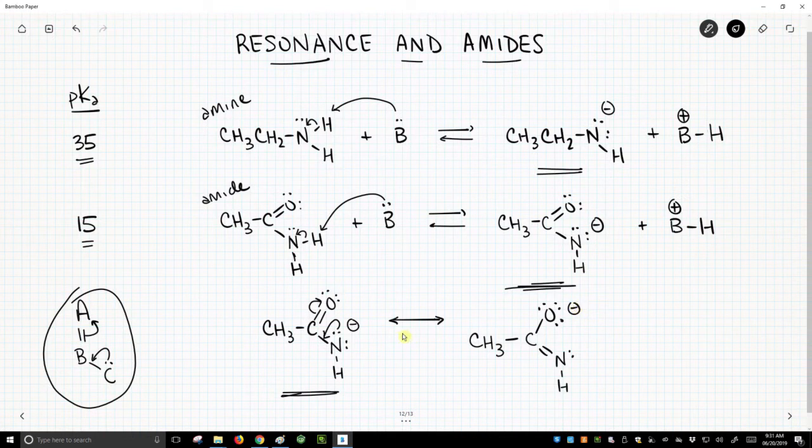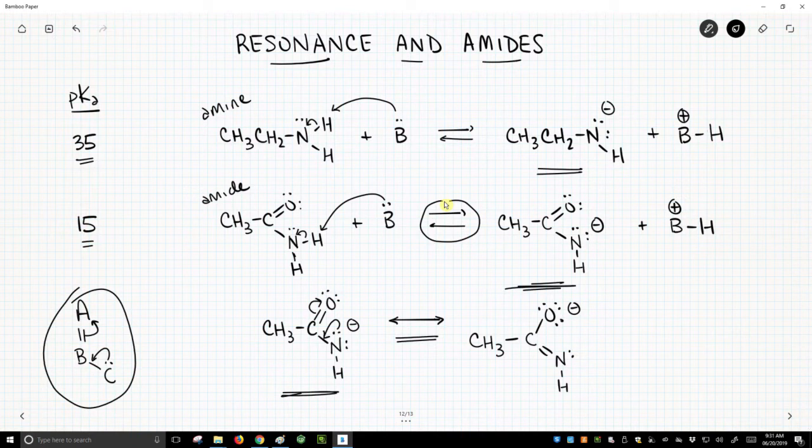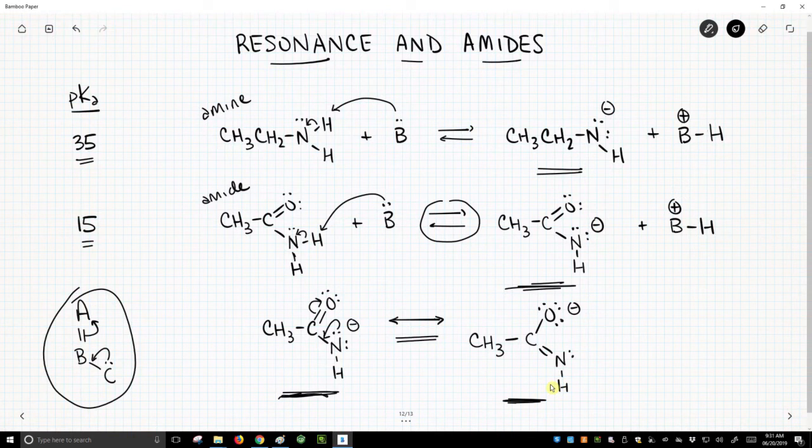One thing I want to point out is here is our arrow that indicates we're showing resonance forms. It's this line with arrows on both ends that's different from our equilibrium arrow, so there is a distinction. Here we have this new conjugate base, and now we've drawn two Lewis representations of this same structure, of this same anion. Which one is better?